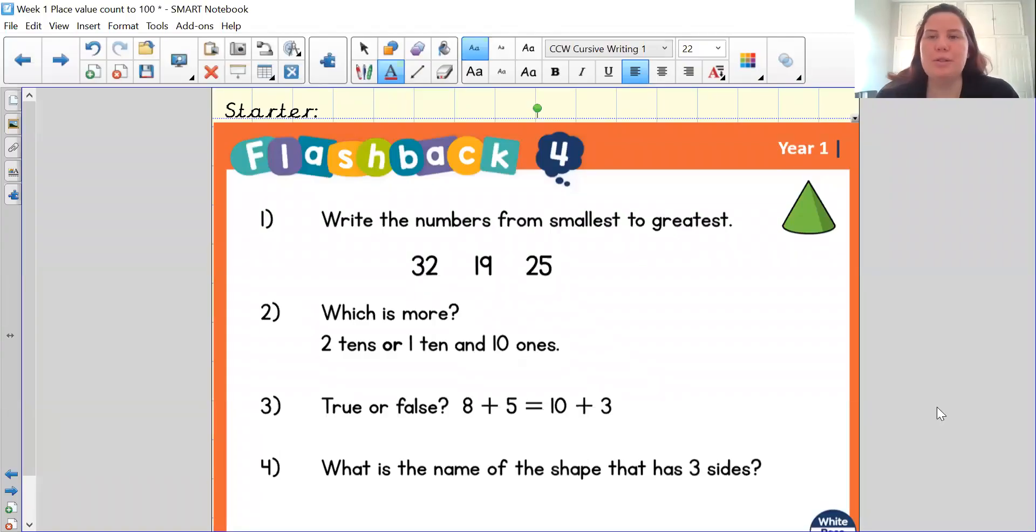Before we begin you're going to need all the resources that you had yesterday. So you'll need your place value grids that you have made, you will need your part whole models, a pencil and some paper and some objects that you are going to use to represent tens and ones. You'll need two sets of different objects for you to do this activity.